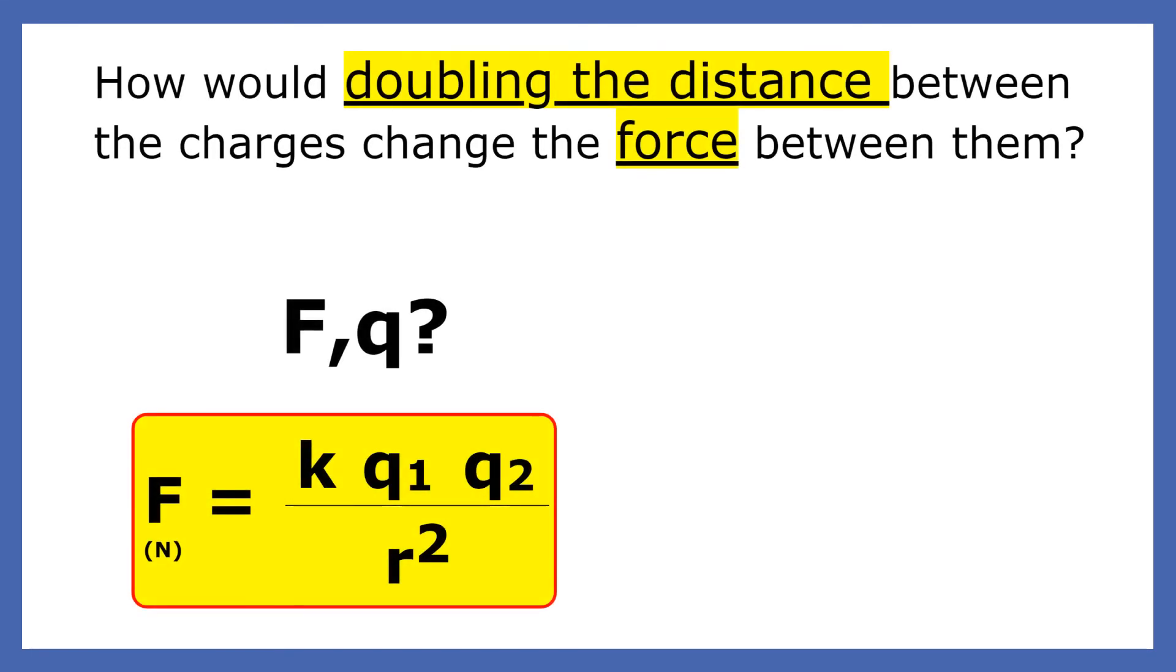How would doubling the distance between two charges change the force between them? You're doubling something in the denominator. That double gets squared because r is squared, so the bottom increases by four. The top doesn't increase, so it's one. One fourth on the right means the force will change by one fourth.